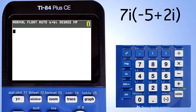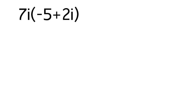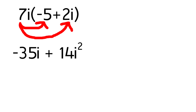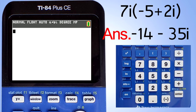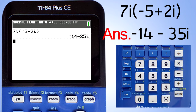Next problem. When you do this problem by hand, you distribute the 7i. That will give us negative 35i plus 14i squared. But remember, i squared equals negative one. That gives our final answer of negative 14 minus 35i. Let's see what the calculator gives us. Enter the problem into the calculator, press the enter key to solve the problem, and there is the answer — same as when we did it by hand.